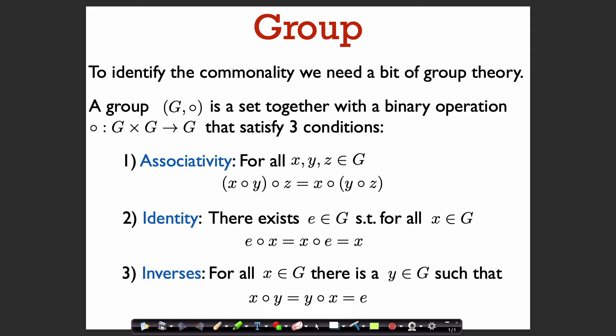A group is just a set together with an operation — I'll call it circle. The operation is a mapping that takes pairs of elements from G to G, and it should satisfy three conditions. It should be associative: (x ∘ y) ∘ z = x ∘ (y ∘ z). There should be an identity element e such that e ∘ x = x and x ∘ e = x. And every element should have an inverse.